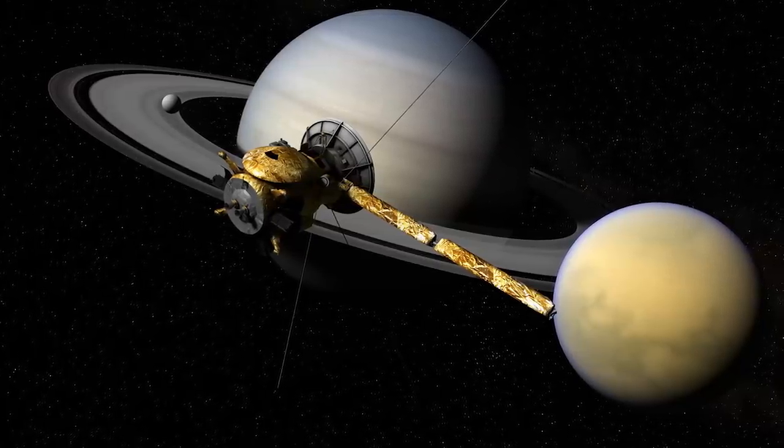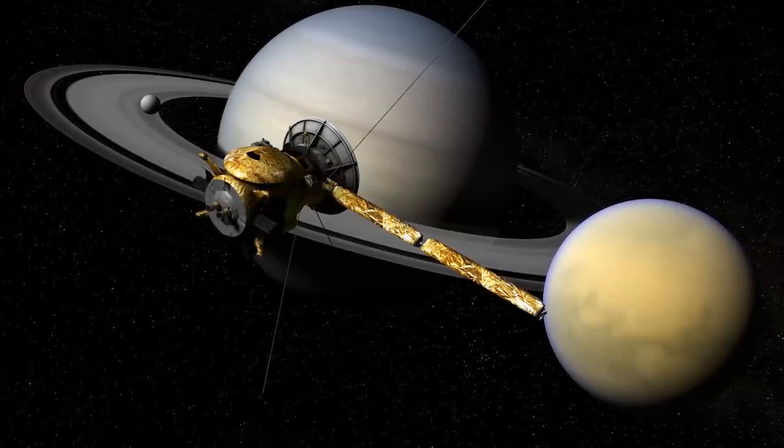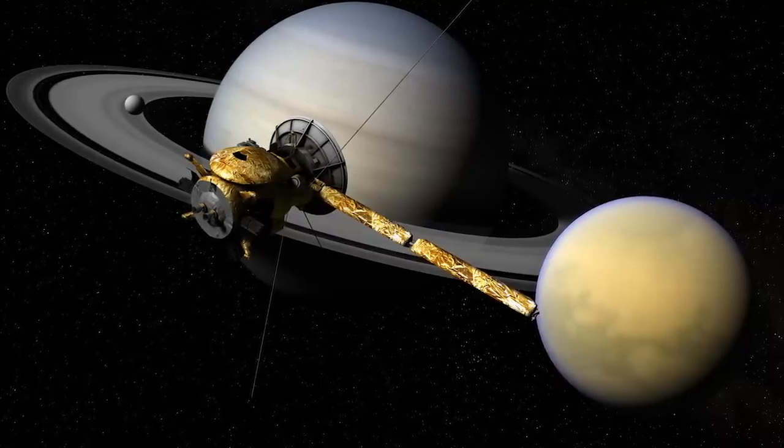Titan's orbital eccentricity is rather high, which means its orbit is not very circular and thus passes closer to Saturn on one side of its orbit.